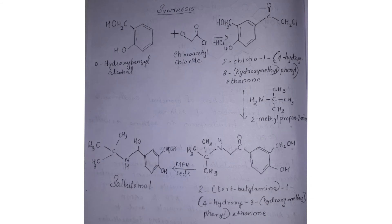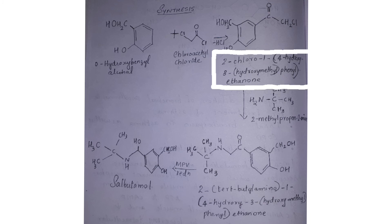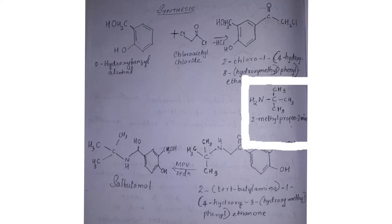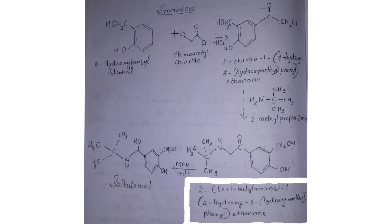Synthesis of salbutamol — there are many ways, but we'll discuss one of them. When chloroacetyl chloride is treated with O-hydroxybenzyl alcohol, HCl is liberated to form 2-chloro-1-(4-hydroxy-3-hydroxymethylphenyl)ethanone. After that, this product is treated with 2-methylpropan-2-amine to form 2-(3-butylamino)-1-(4-hydroxy-3-hydroxymethylphenyl)ethanone.